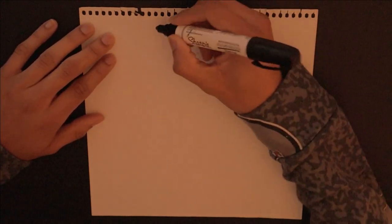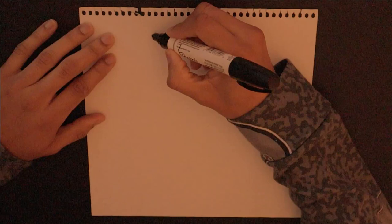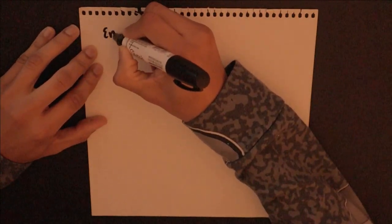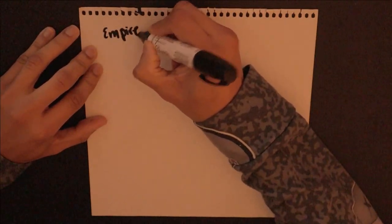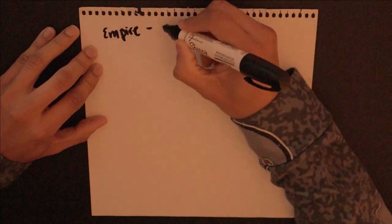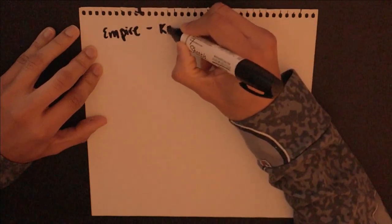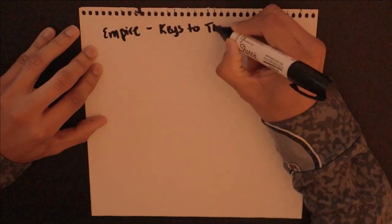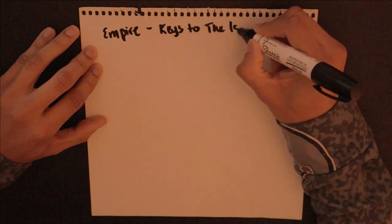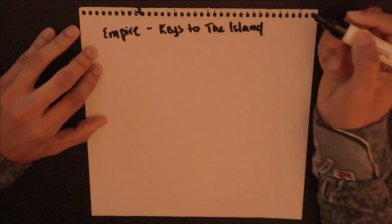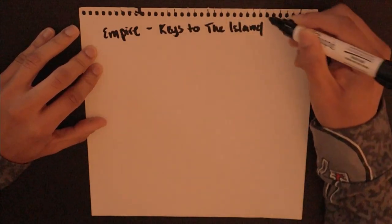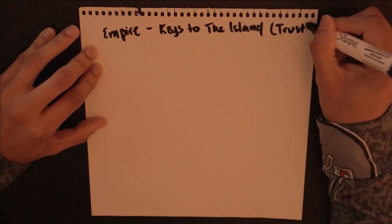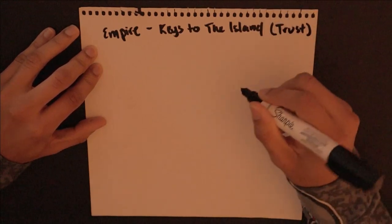So right now I'm going to break it down from the top to the bottom, starting with the empire. The empire is the name of your trust fund or the name of your actual empire. So in this case, the name of my empire or my trust fund is Keys to the Island.